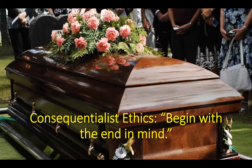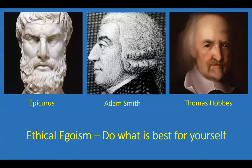This is a very powerful illustration because most of us do want our lives to count for something. We don't want our lives to be a complete waste. Now, one kind of consequentialist ethics is known as ethical egoism, which says: do what is best for yourself. Three people associated with this ethical approach are Epicurus, Adam Smith, and Thomas Hobbes.